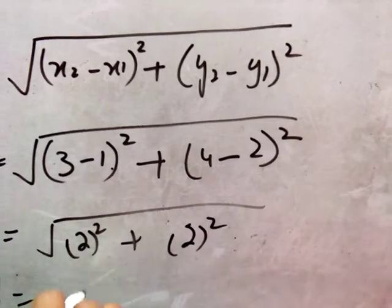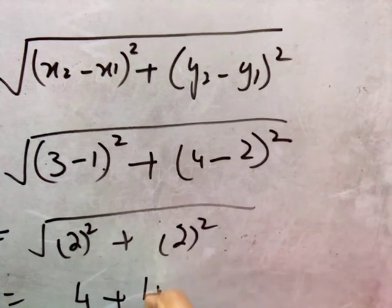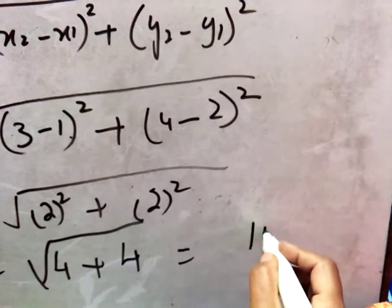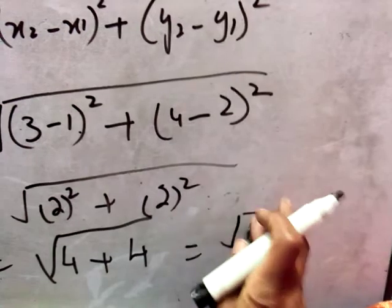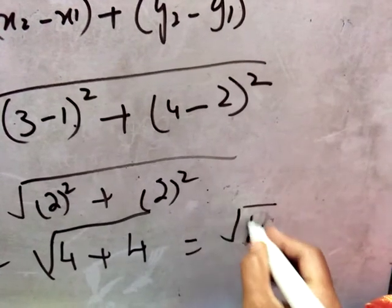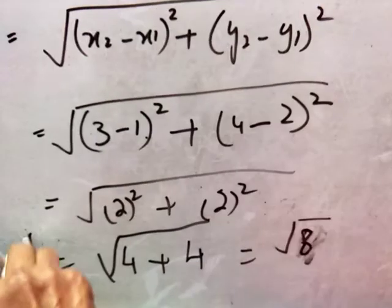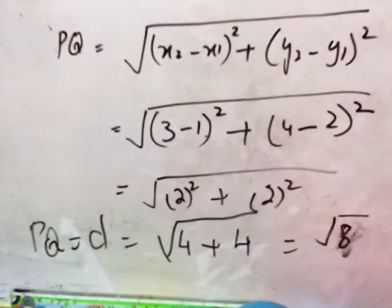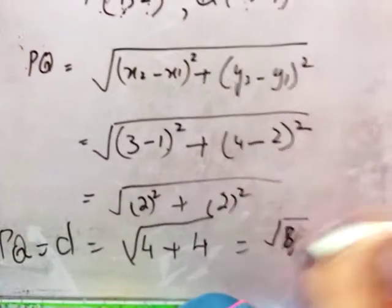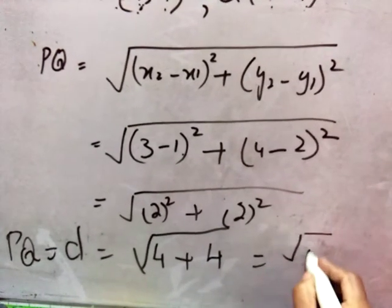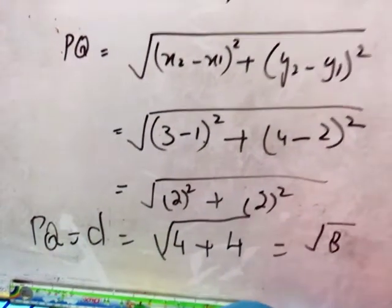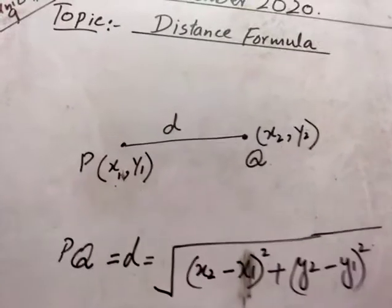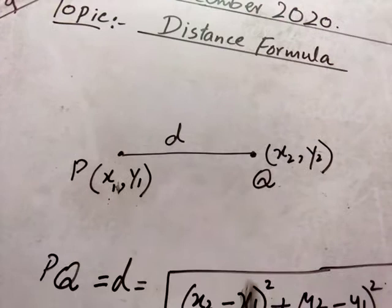This equals (2 squared) plus (2 squared), which is 4 plus 4, and the square root of 8 — that is, under root 8. This is the distance between P and Q. So we can find the distance between two points like this using the distance formula. The derivation of the distance formula is also important.